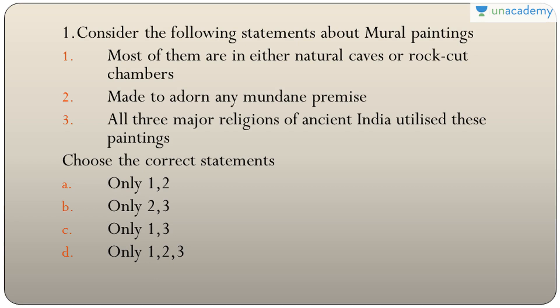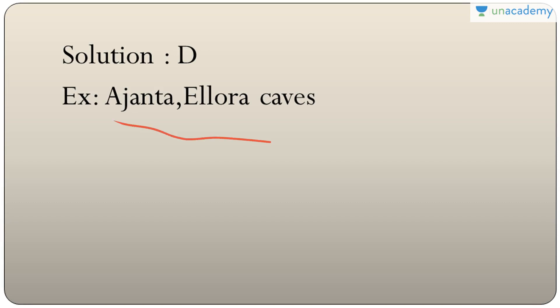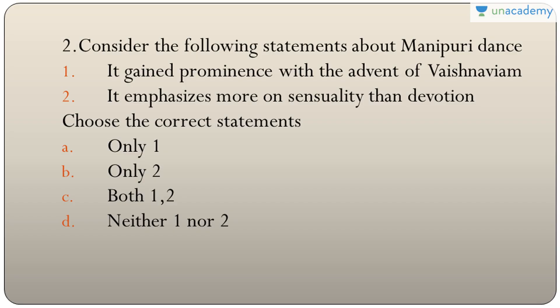Question one: statements about mural paintings — most are in natural caves or rock chambers, they are made to adorn any mundane premises, and all three major religions of ancient India utilized them. All three are correct, so the answer is only one, two, and three. Best examples are found in Ajanta and Ellora cave paintings.